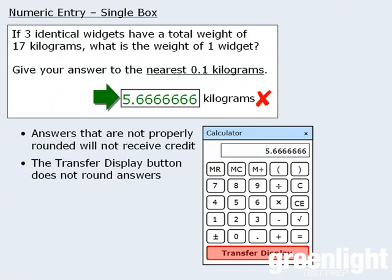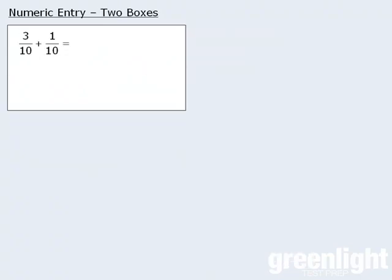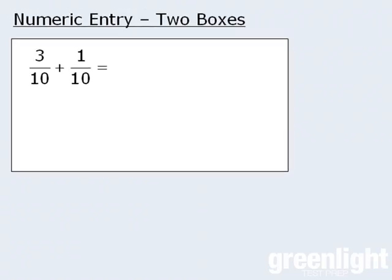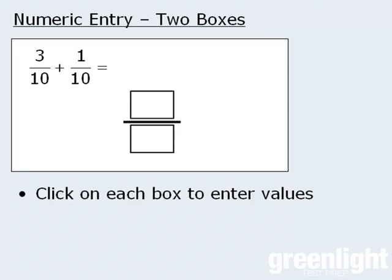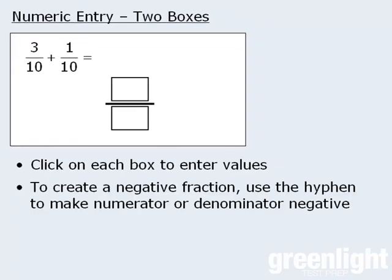Now there are two types of numeric entry questions. So far we've examined the single box questions. The other question type is the two box question where the answer must be expressed as a fraction. To enter values for the numerator and denominator just click on each box and use the keyboard to enter your values. To create a negative fraction use the hyphen to make either the numerator or denominator negative.